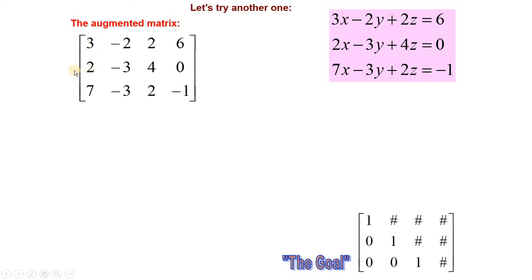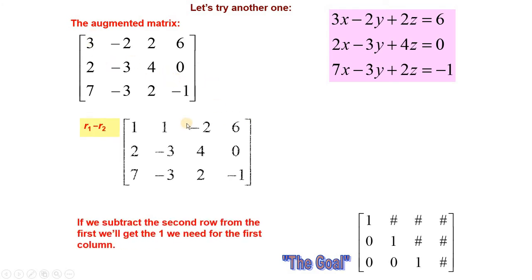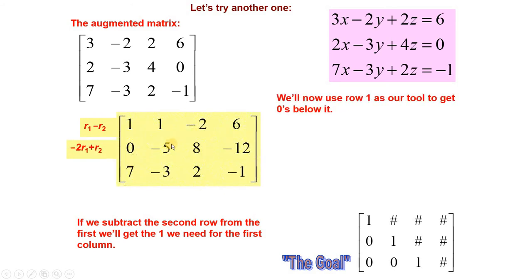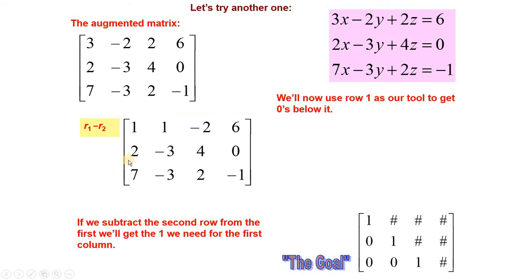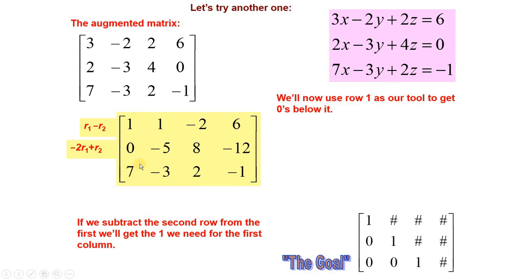This is another system of equations and its augmented matrix. Now here we need to bring 1: using R1 minus R2, here 1 appears. 3 minus 2 is equal to 1, minus 2 plus 3 is equal to 1, 2 minus 4 is equal to minus 2, 6 minus 0 is equal to 6. Now to make this 2 equal to 0, we use R2 minus 2 times R1, which gives 0 here. Similarly, R3 minus 7 times R1 gives 0 here.